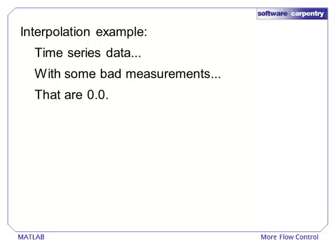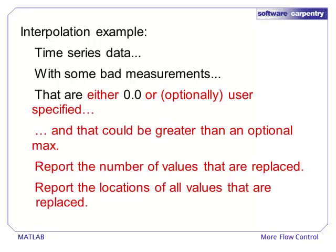and our function filled in those zeros by interpolating from nearby values. In this episode, we will make our function more useful by adding extra parameters and return types.